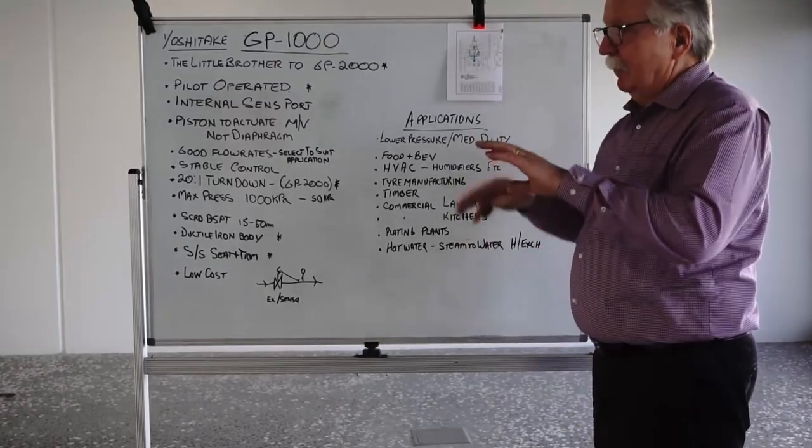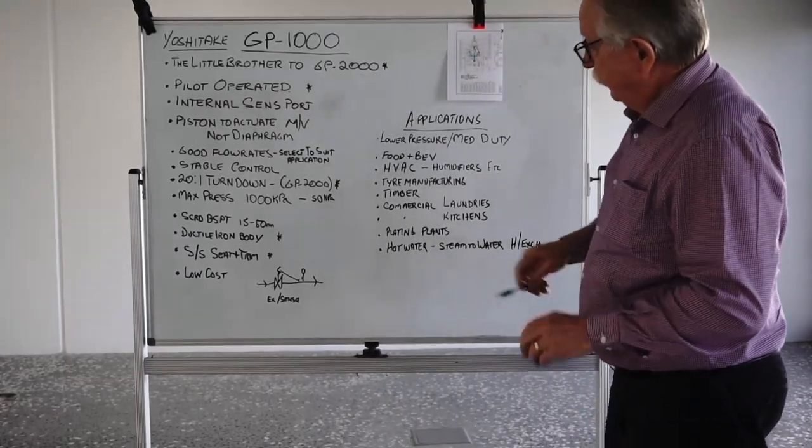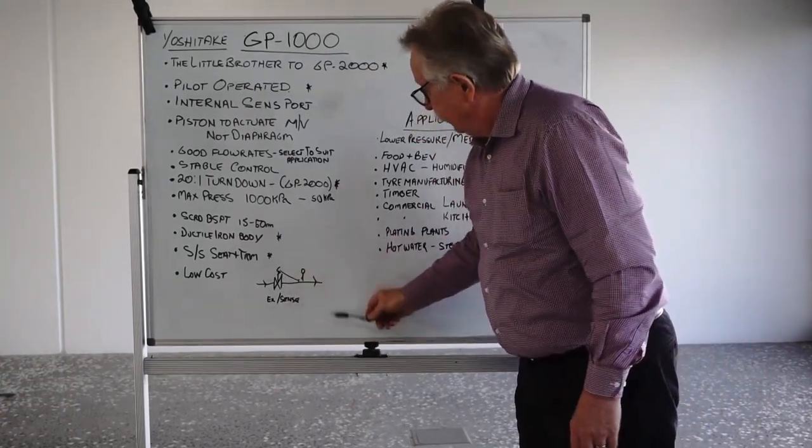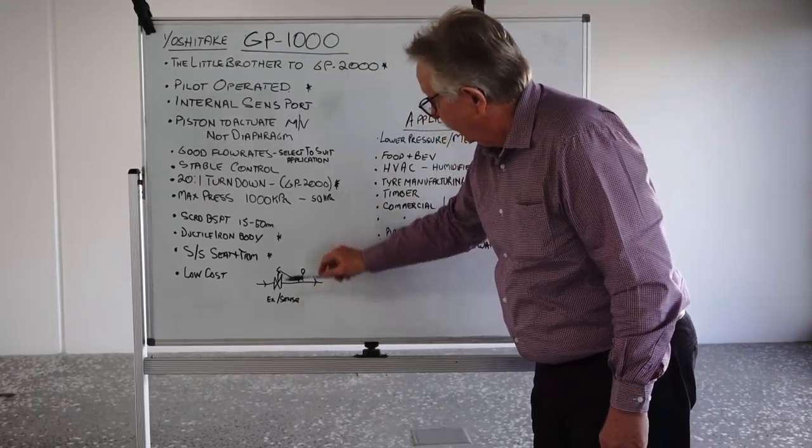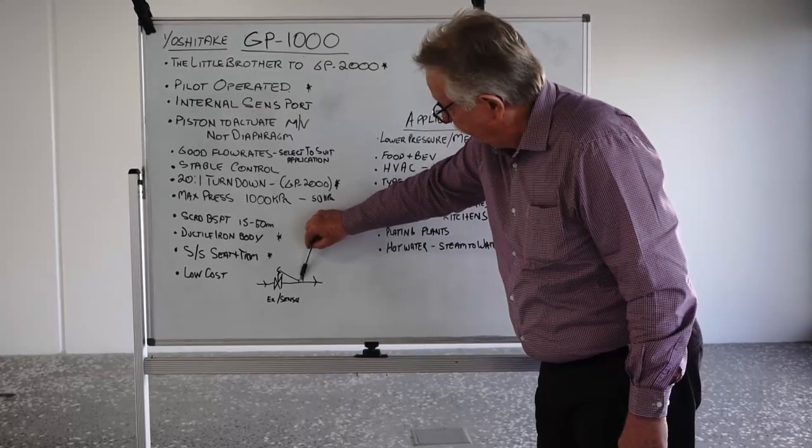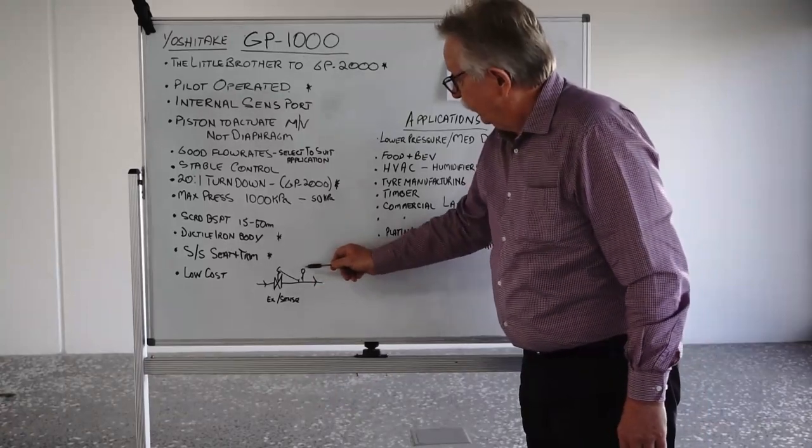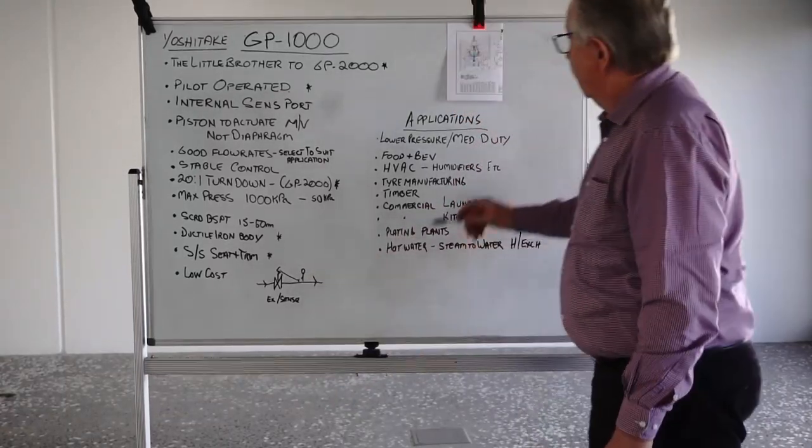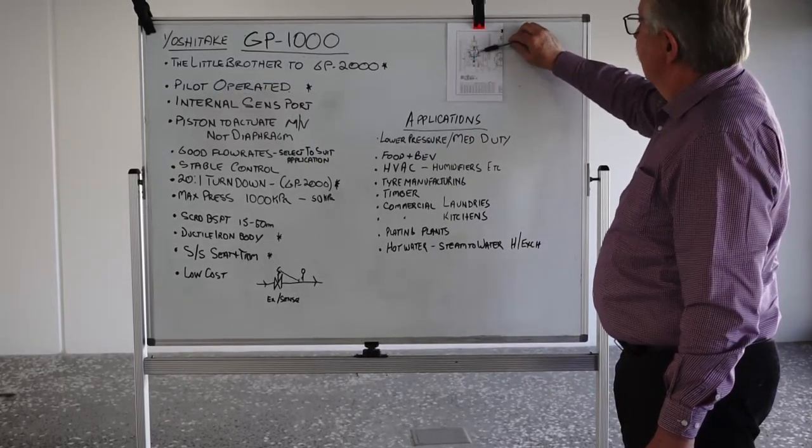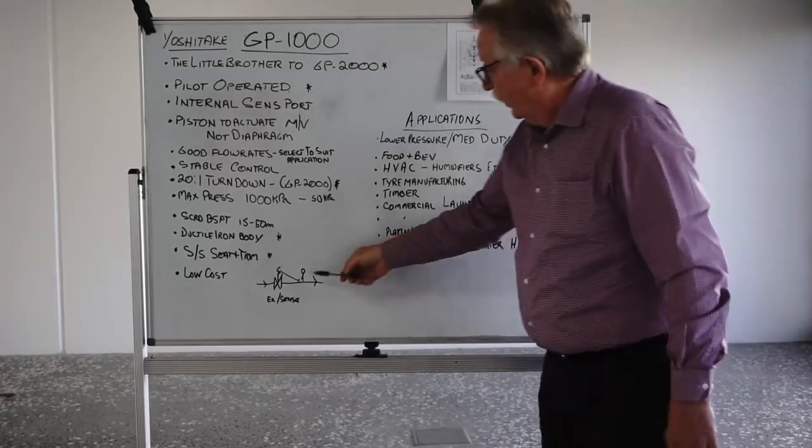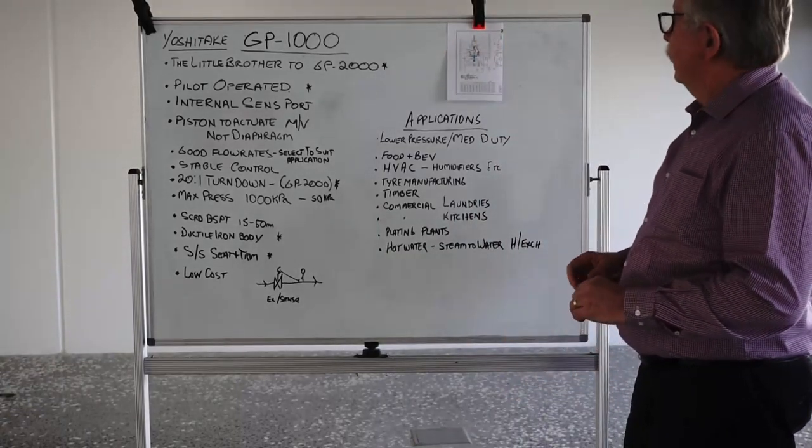And depending on load and demand, it'll just modulate all day long trying to maintain the downstream pressure that you set it at. If we have a quick look at this little sketch I did here earlier, this is what the GP2000 might look like. It would have an external sensor. And people may be familiar with the pipe that runs down from the sense port on the valve and into the pipe work downstream. And you set your pressure against a pressure gauge. You do exactly the same thing with your piston operated type. But this one has got a little internal sense pipe. So that does reduce a little bit of extra pipe work and installation time that you might have to do.